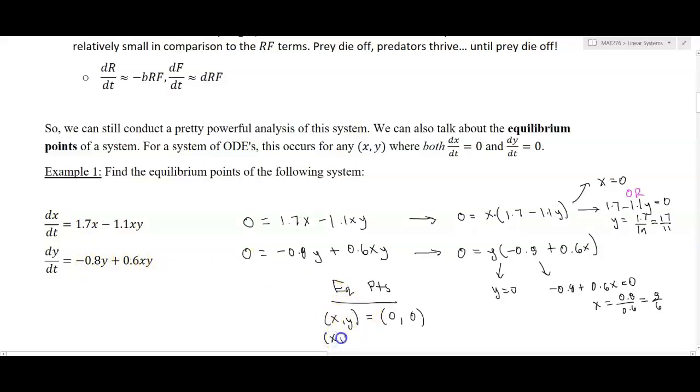The other way for this to happen is if in the first equation, y is 17/11. If y is 17/11, that'll make the first equation zero. The second equation will only be zero if y is zero, which can't be true, or if x is 8/6. If you plug in 8/6 for x and 17/11 for y, you get dx/dt is zero and dy/dt is zero. So there are actually two equilibrium points for this system because it's nonlinear.